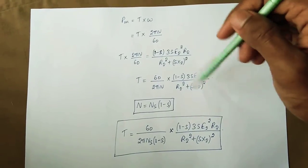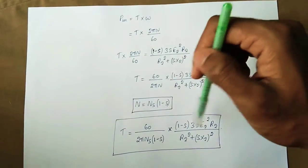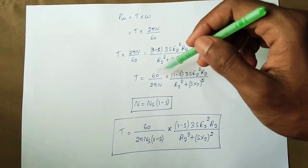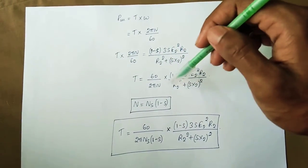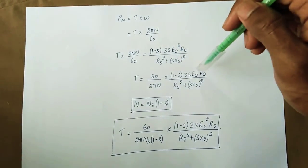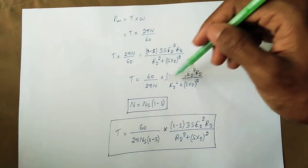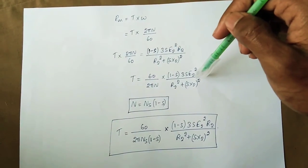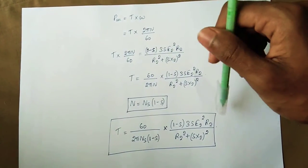Rearranging for torque T, we get T = (60 / 2π) × (1 − s) × 3s × E₂² × R₂ divided by (R₂² + (sX)²).